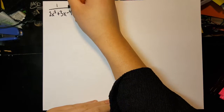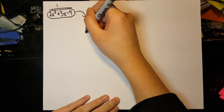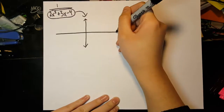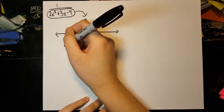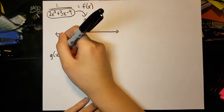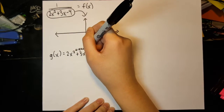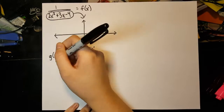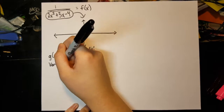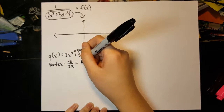Let's take a look at the range and the graph of the denominator of this equation. The denominator is a quadratic. We can use negative b over 2a to locate the vertex, which is negative three-fourths. Solving for y when x equals negative three-fourths, y is negative 41 over 8.